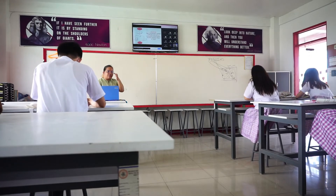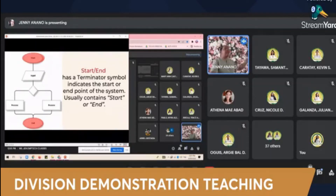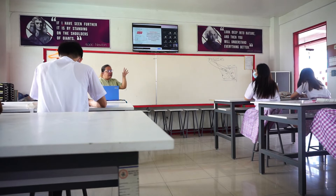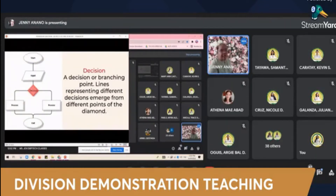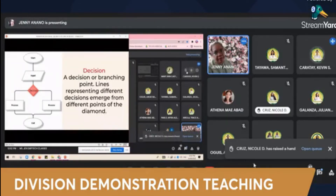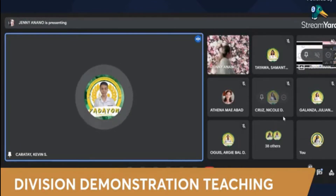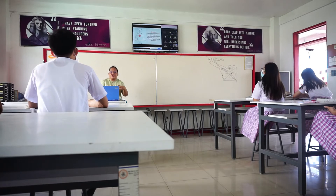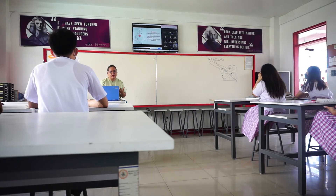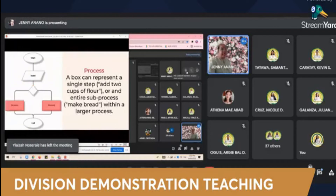Let's look at the different elements of flowcharts. First, the terminator — its symbol is an oval and it indicates the starting point and end point. Next is input — its symbol is a parallelogram, used to represent materials or information entering or leaving the system. Then there is the decision or branching point — represented by a diamond. Lines representing different decisions emerge from different points of the diamond and answer yes or no, go or no go.